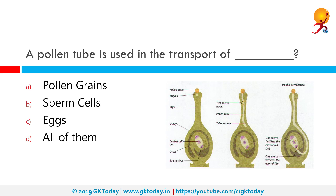A pollen tube is used to transport sperm cells. Pollen is produced by the stamen, the male reproductive organ of the flower. Each pollen grain contains a vegetative cell and a generative cell that divides to form two sperm cells. Due to the absence of a motility system, sperm cells of flowering plants rely on directional growth of the pollen tube towards the egg apparatus, which is deeply embedded in the maternal tissue of the ovary and ovule respectively.